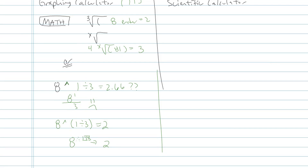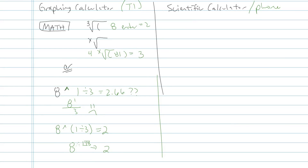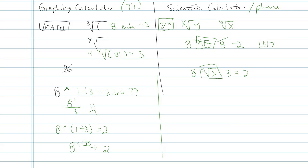Now let's talk about scientific calculator people — same thing with phones. If you turn your iPhone or smartphone sideways, it does have the capability to do these types of problems. On your phone or on your scientific calculator, find the button that either says x root y or y root x. You might have to push the second function first if it's in a color above one of the buttons. The calculator I have in front of me — I need to push 3, then the x root y button, then 8, and that gives me 2. If you get 1.147, that means you need to do the 8 first, then y root x, then 3. Practice on the calculator you're going to use on the test.